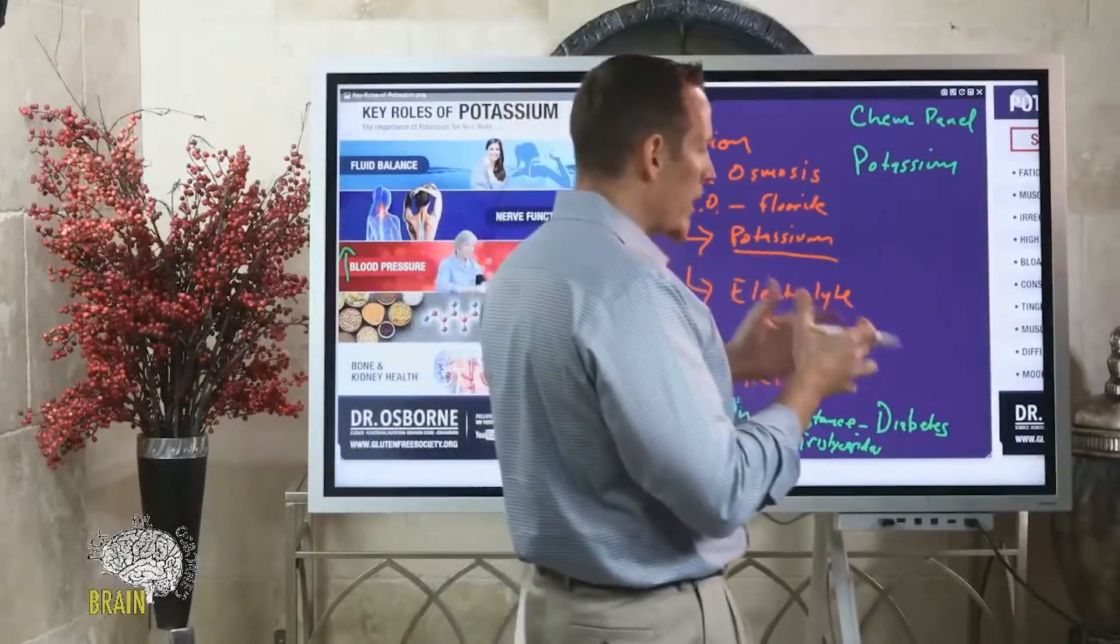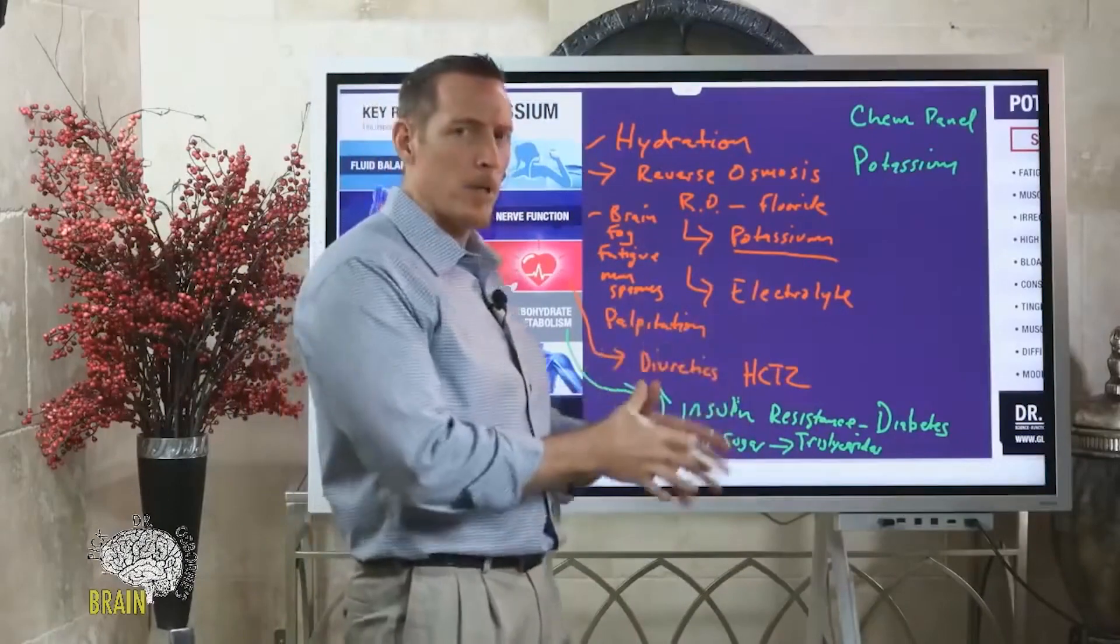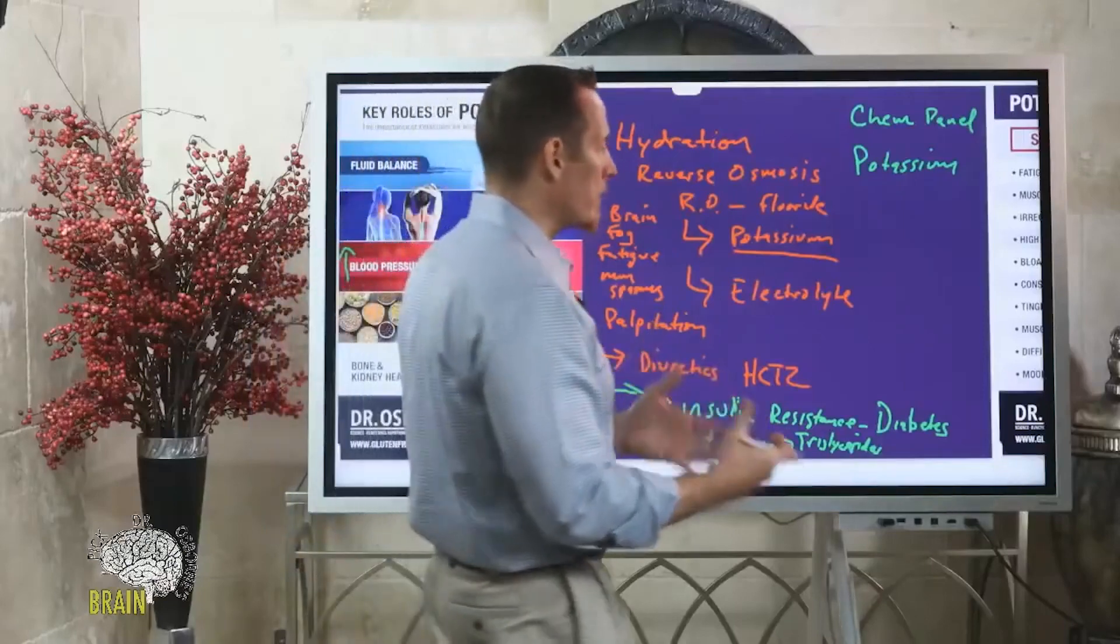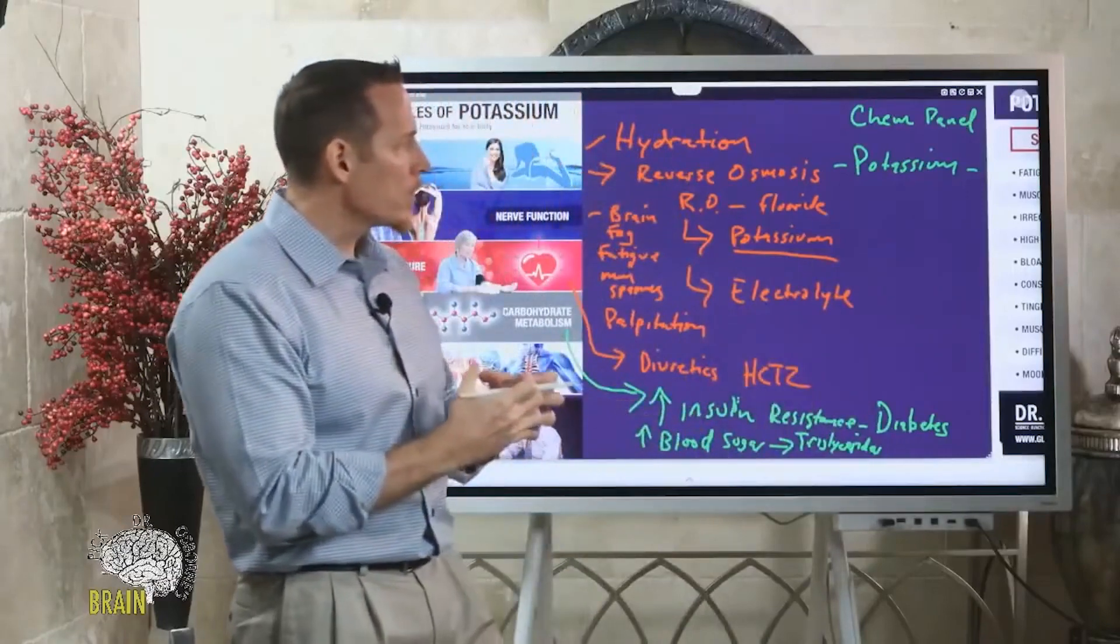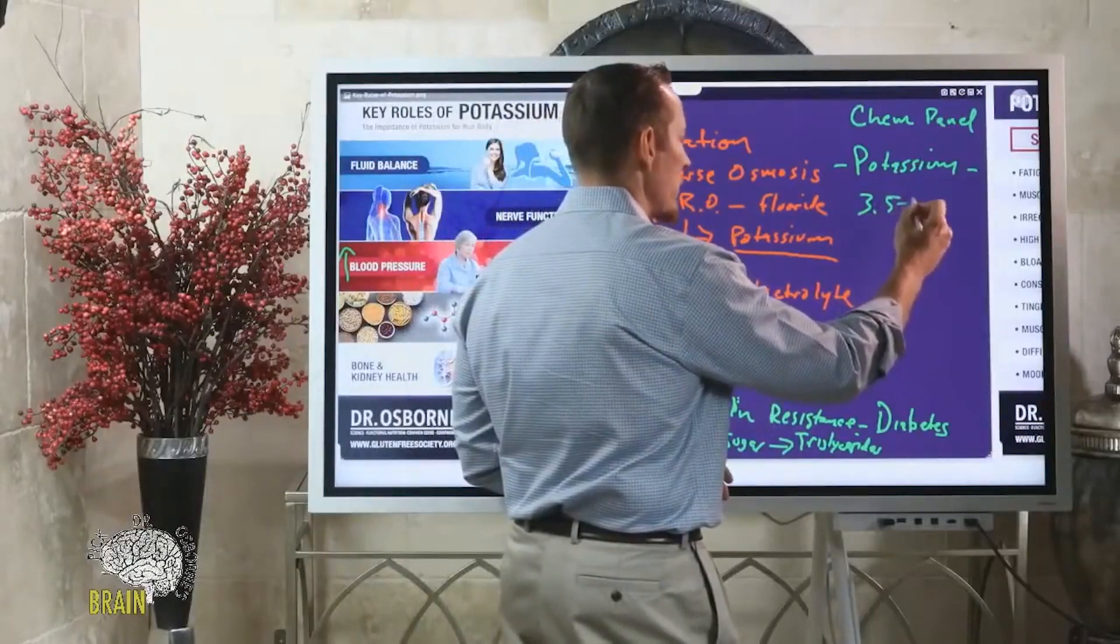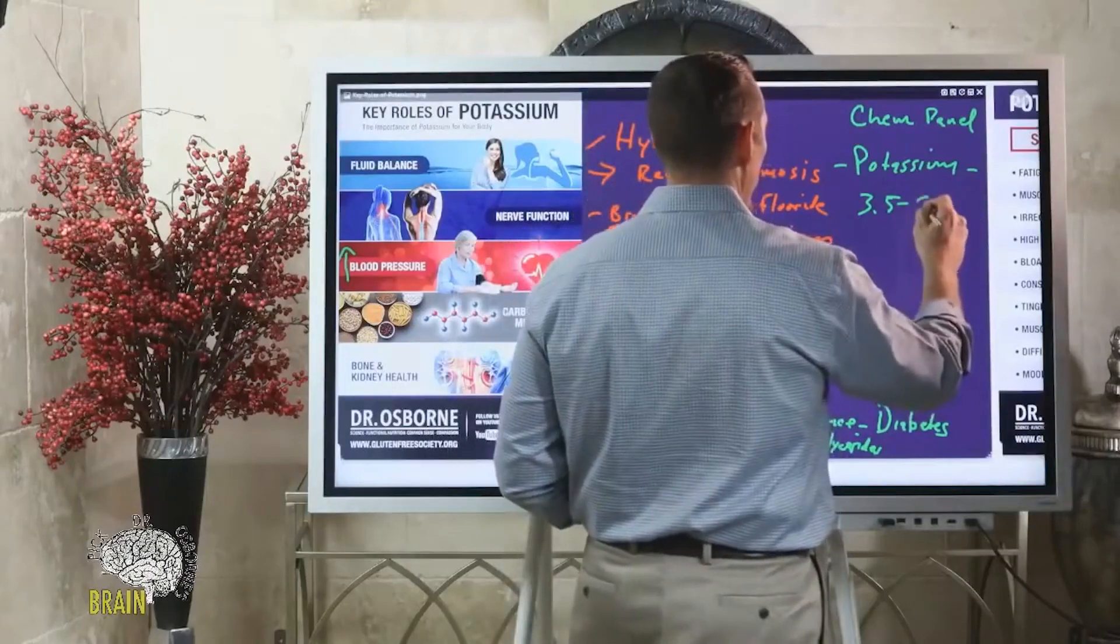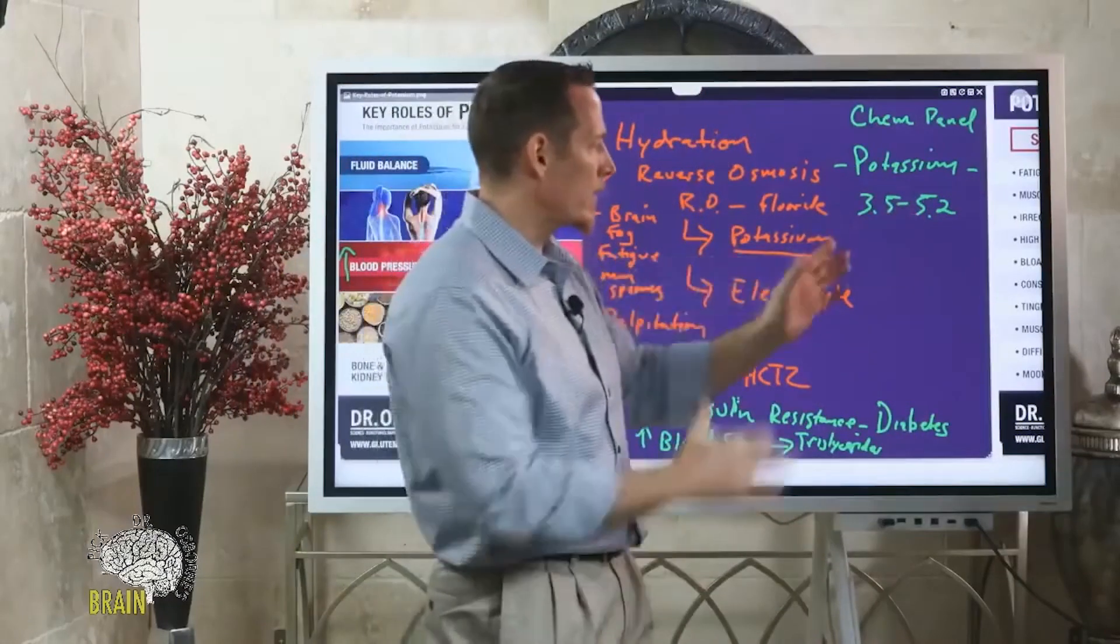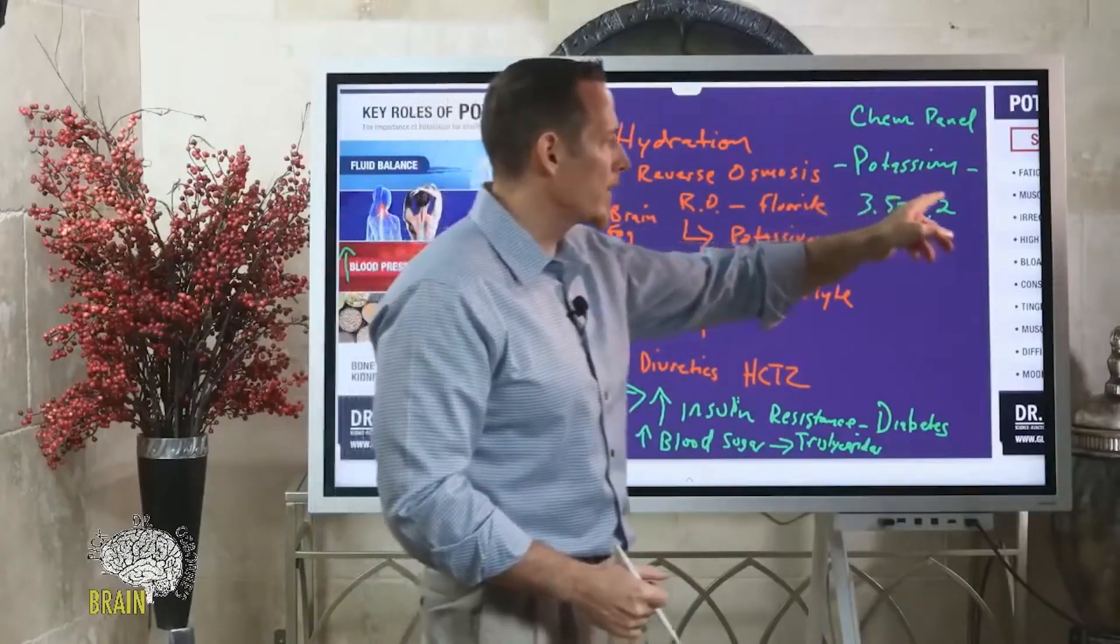This chemistry panel usually will measure your potassium levels. But your blood levels or serum levels of potassium - remember, potassium works in the blood but it also works in the cell, it works in the nerve, it works intracellularly. So the best way to really measure potassium is not in the blood, and the reason why is your body does a really good job of keeping those levels pretty constant.